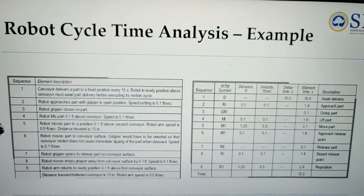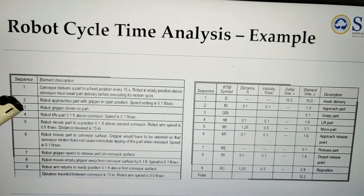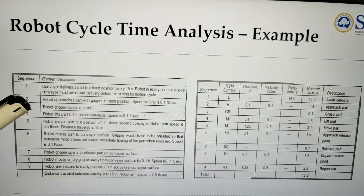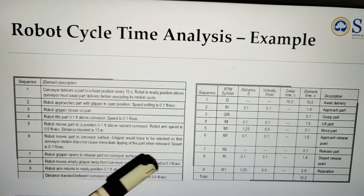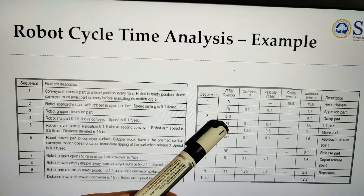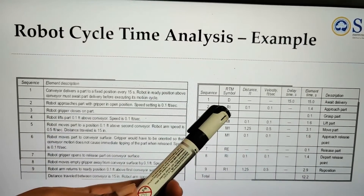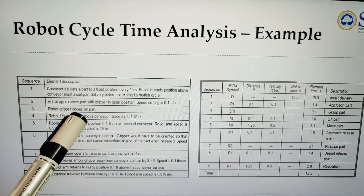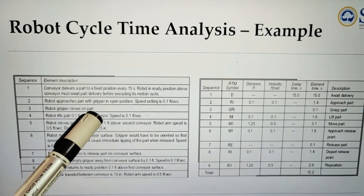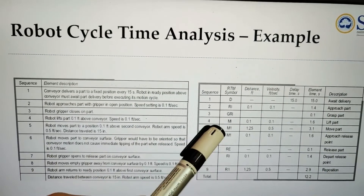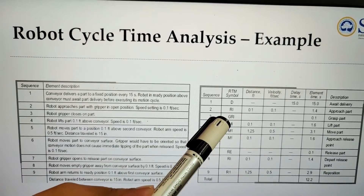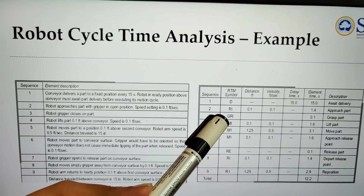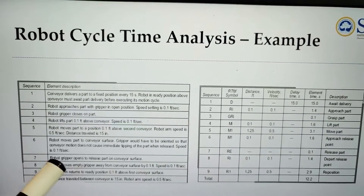Second, the robot approaches the part with the gripper in open position, using the symbol RI. Next, the robot gripper closes on the part, using the grasping symbol GR1.